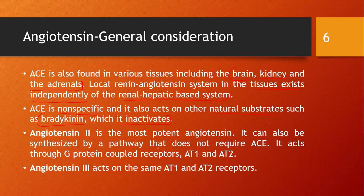Angiotensin 2 is the most potent angiotensin and can also be synthesized by pathways that do not require ACE, so inhibiting ACE does not entirely prevent its formation. Angiotensin 2 acts through G protein-coupled receptors called AT1 and AT2 receptors. Angiotensin 3 also acts on the same AT1 and AT2 receptors.